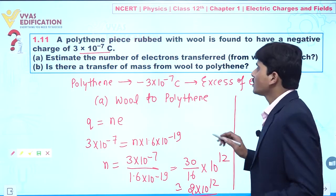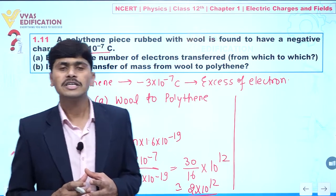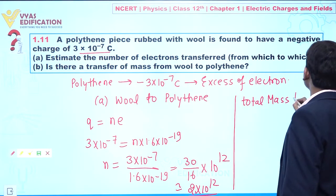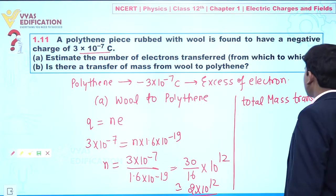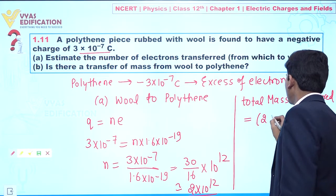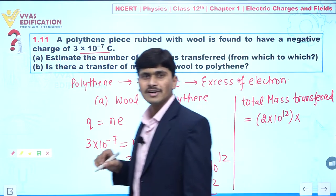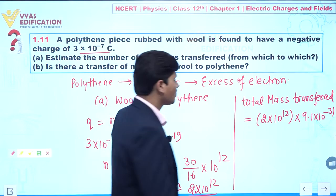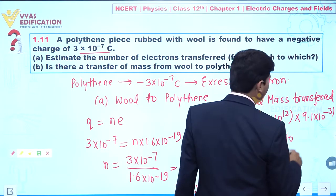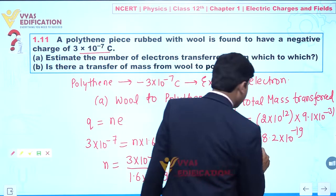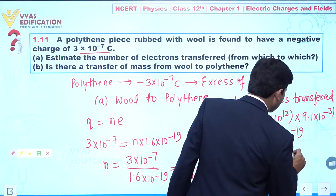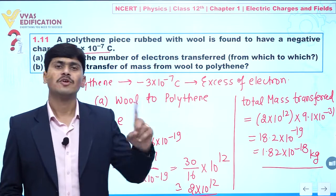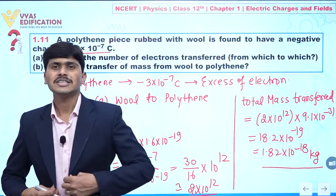Now our objective in the second part is to determine if there is any mass transfer. Yes, because an electron has a mass of 9.1 into 10 to the power minus 31 kg. Total mass transferred equals 2 into 10 to the power 12 multiplied by 9.1 into 10 to the power minus 31 kg, which gives 1.82 into 10 to the power minus 18 kilogram. Although this mass is very small, because electrons are transferring from wool to polythene, there is definitely some mass transfer as well.